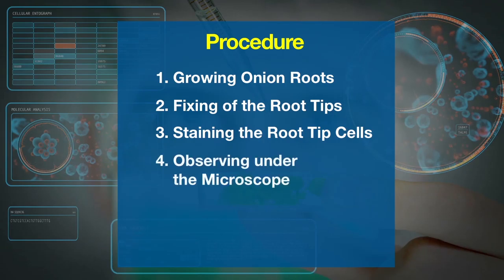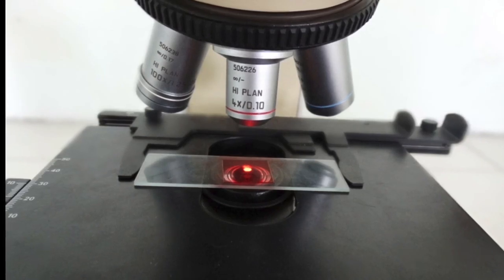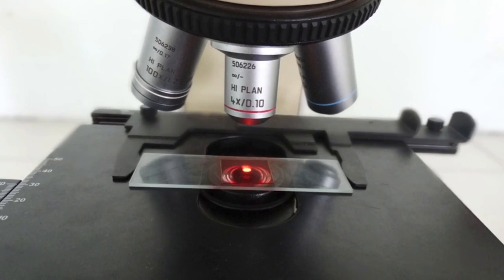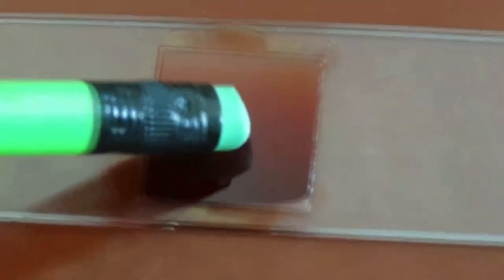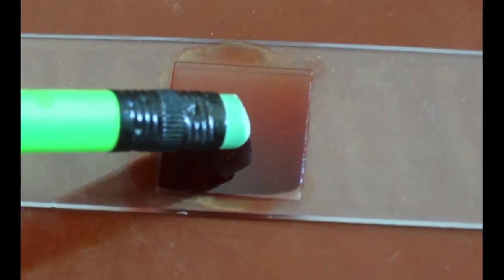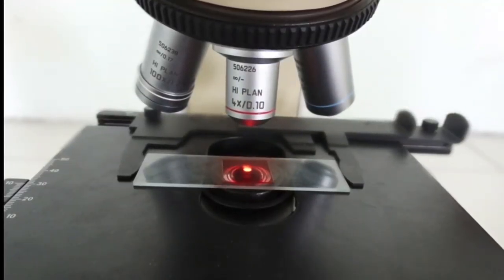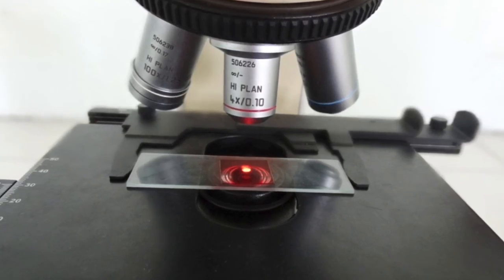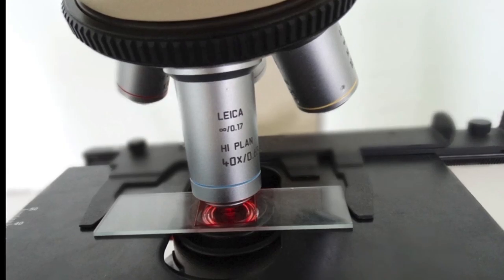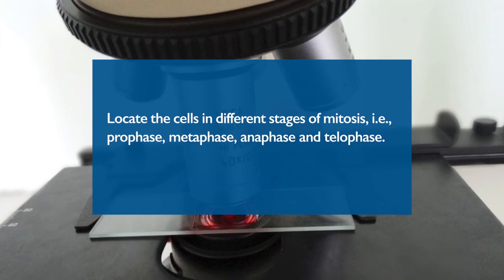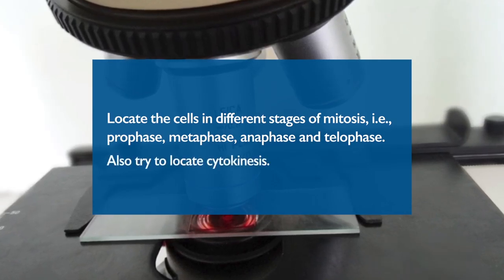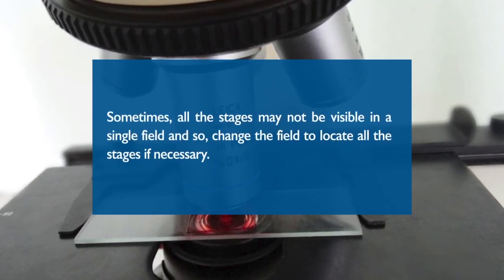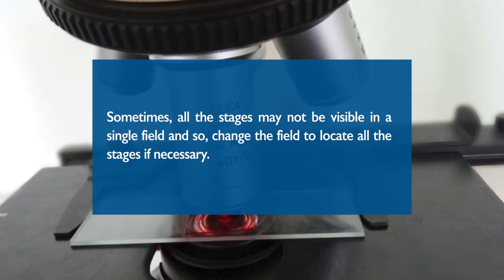The next step is observing under the microscope. Place the slide under the 10x objective of a compound microscope and scan to see if the cells are spread in a monolayer. If the cell spread is thick and does not form a monolayer, take out the slide and squash the cover slip again with the pencil eraser. Once a nicely spread monolayer of dividing cells is visible, switch to the 40x objective. Examine the cells and identify the different stages of cell division: prophase, metaphase, anaphase, and telophase. Also try to locate cytokinesis. Sometimes all the stages may not be visible in a single field, so change the field to locate all the stages if necessary.